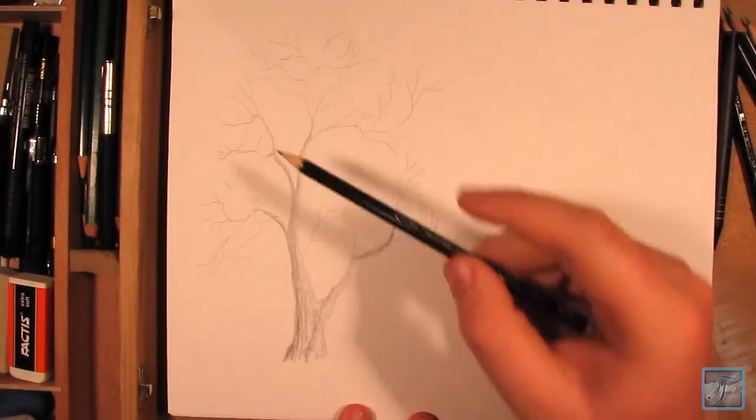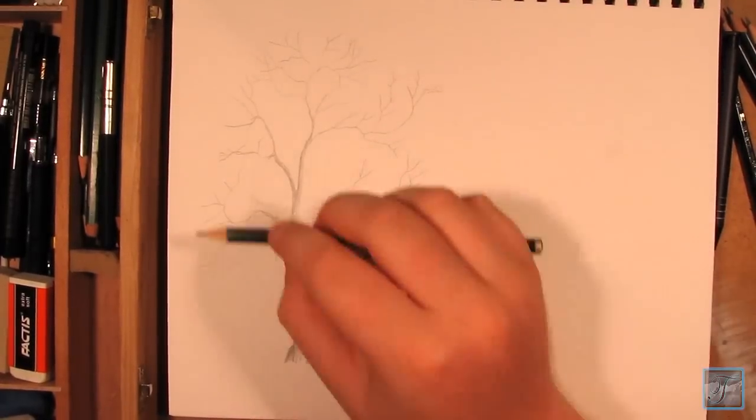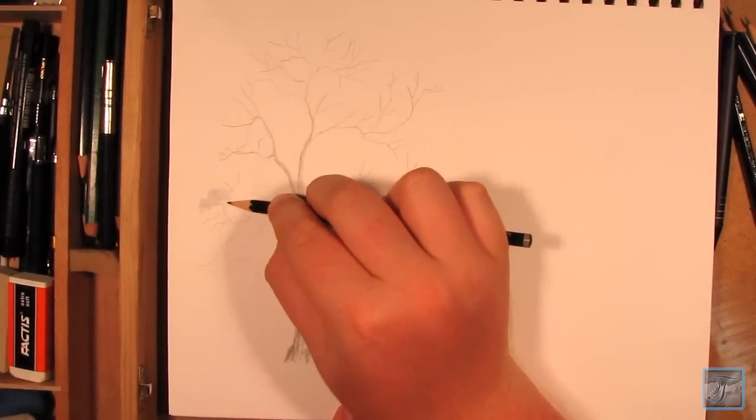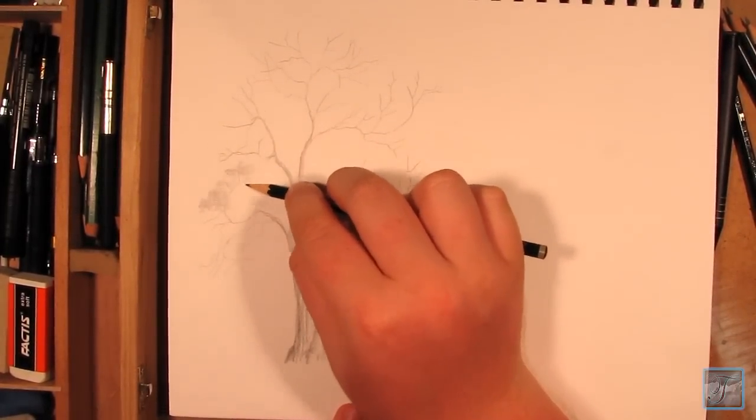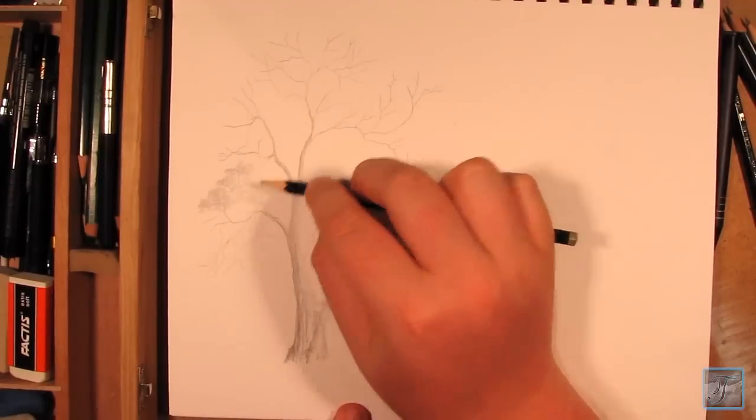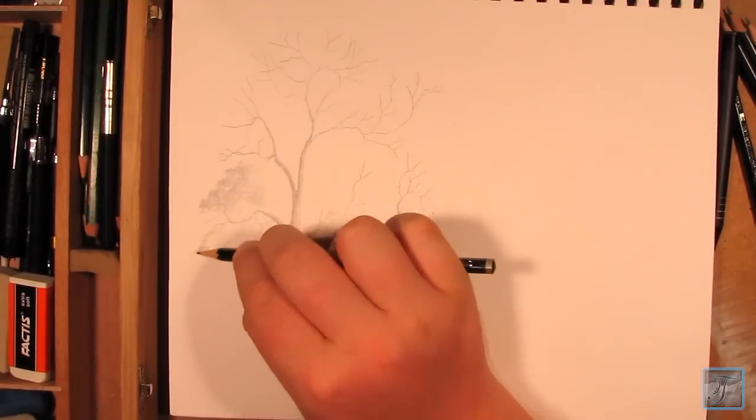After you draw the leaves in, it helps to give it more of a lifelike sort of feel, so it kind of ties it all together. If you want a winter tree, you just leave it without the leaves. But if you want to make it look more like summer, then you can go right ahead and add some of those leaves in.